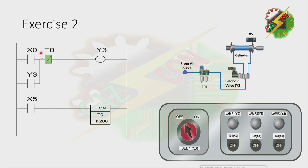Now let's analyze my program. If we press X0 or PB1, Y3 will turn on, and Y3 will not turn off because there is a latching here, even if we release X0. The only way to turn it off is by activating T0. To activate T0, we need to energize X5, which is the fully extended position.